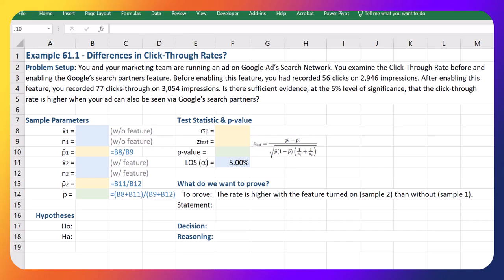In this video we're going to look at the difference between click-through rates with a feature enabled and disabled. We're trying to prove that the click-through rate is higher when your ad can also be seen via Google's search partners.